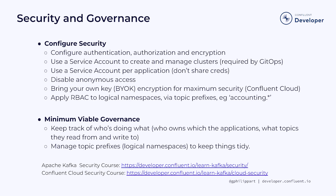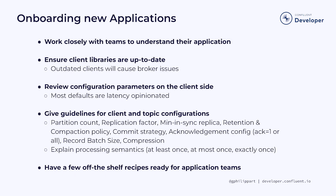On the governance side of things, try to keep it simple too. At level three, you just need to do the bare minimum: keep track of who's doing what on the platform, who owns which applications, what topics they read from and write to. Also, manage those topic prefixes to keep things tidy. When you're onboarding new applications, it's essential to work closely with the teams and gain a deep understanding of their applications. The worst situation is when platform teams don't want to know anything about which applications run on the platform and what they are doing. Platform operators must talk to the teams to understand their applications and challenges.